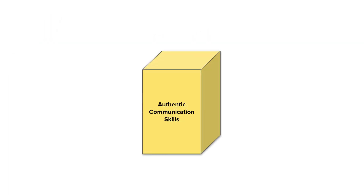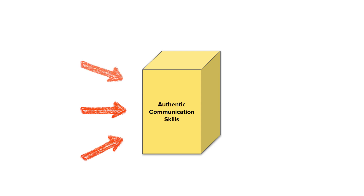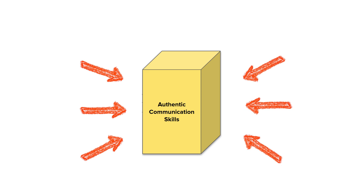Each pass through the framework results in additional skills the child can now use independently. Each message we identify will pass through these steps, and we may be working with multiple messages in parallel. This means we may be at different steps in the framework for different messages, all at the same time.